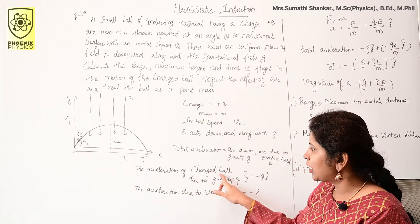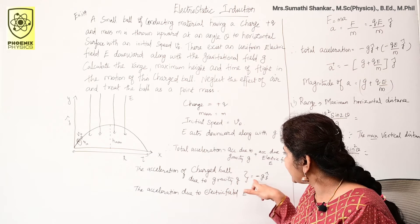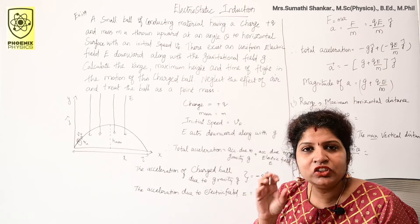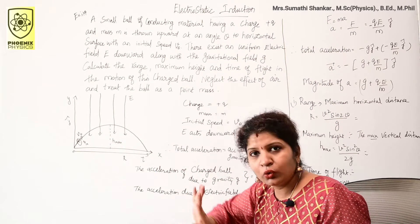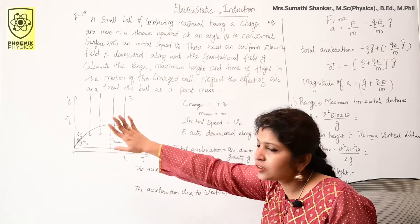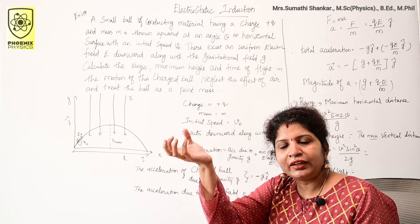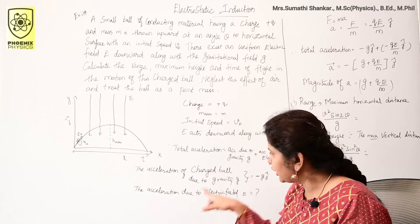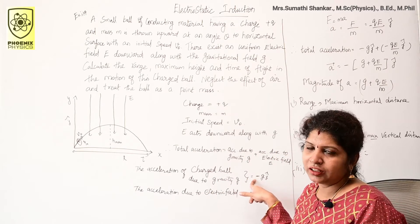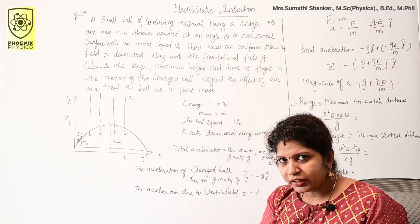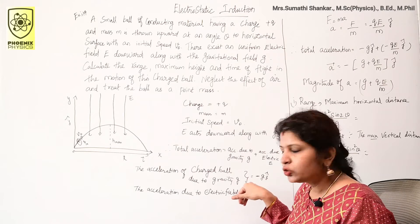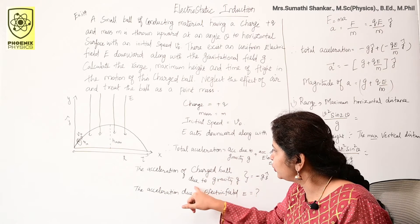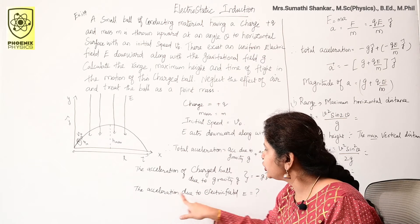The acceleration of the charged ball due to gravity is g, which equals −g ĵ, where ĵ is the unit vector along the y-axis. I and j are unit vectors acting along the x-axis and y-axis respectively. When you throw a ball, it is attracted towards the ground — downward — so g acts downwards. That is why we put a minus sign; the downward direction is the negative y-direction, giving us −g ĵ.